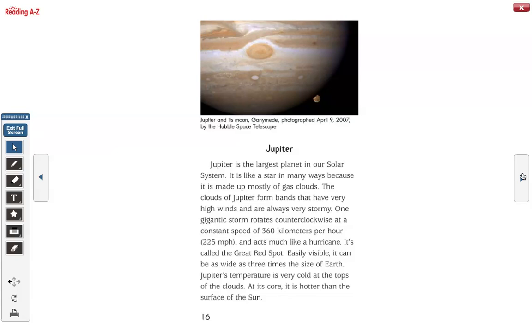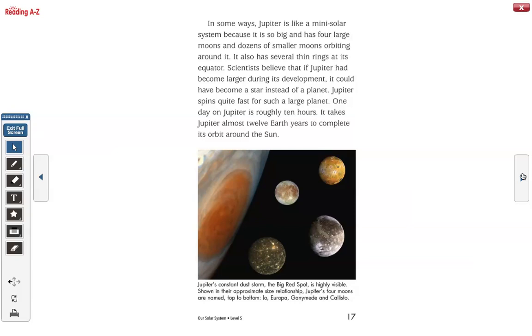Jupiter's temperature is very cold at the tops of the clouds. At its core, it is hotter than the surface of the Sun. In some ways, Jupiter is like a mini solar system because it is so big and has four large moons and dozens of smaller moons orbiting around it. It also has several thin rings at its equator. Scientists believe that if Jupiter had become larger during its development, it could have become a star instead of a planet.